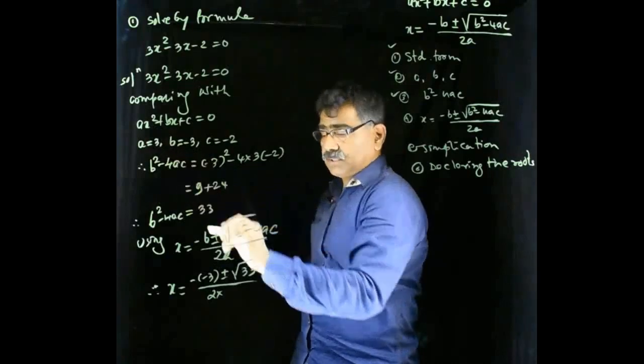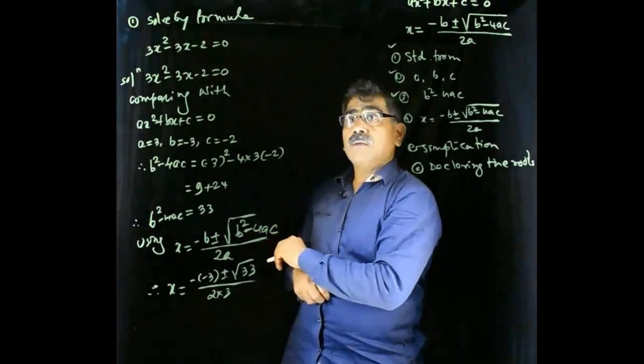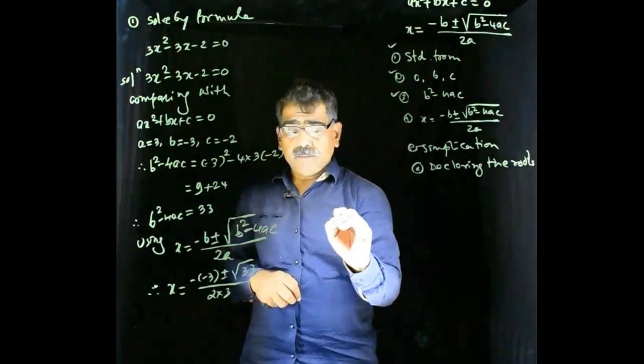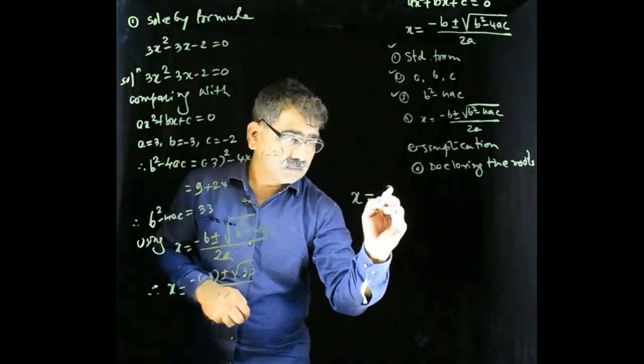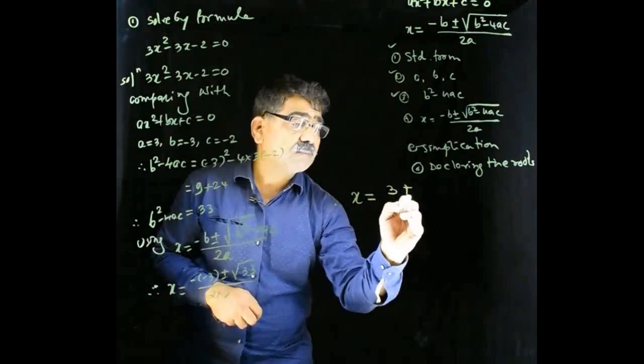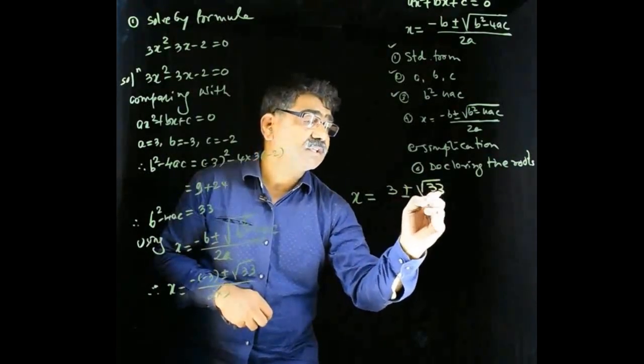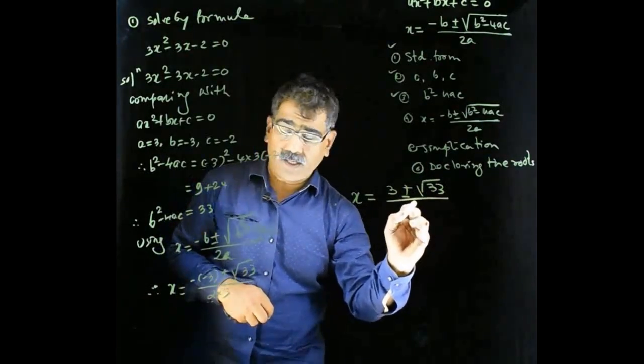So, what I got at the end? Therefore, x is equal to 3 plus or minus under root 33 divided by 6.